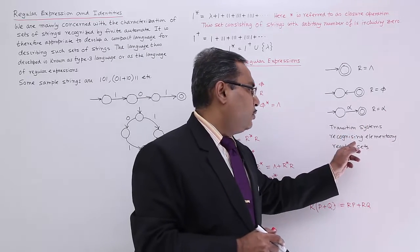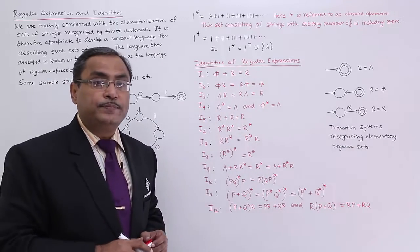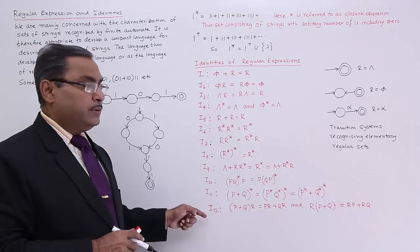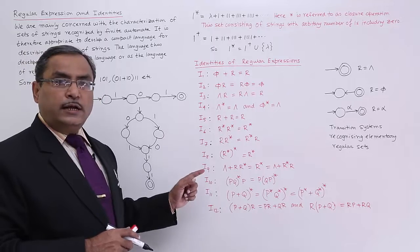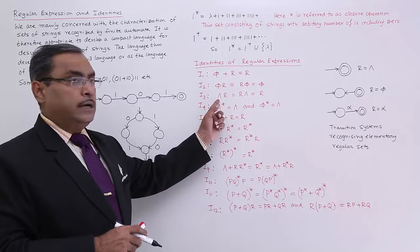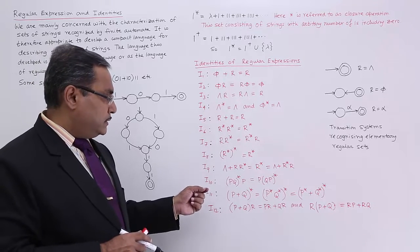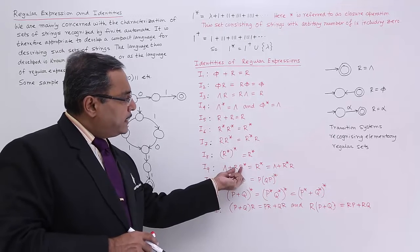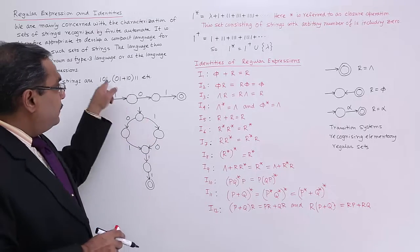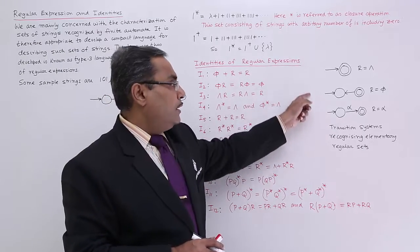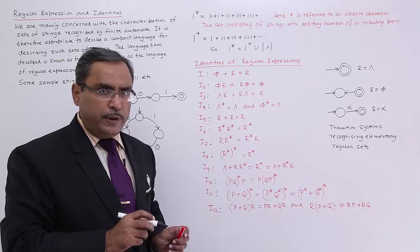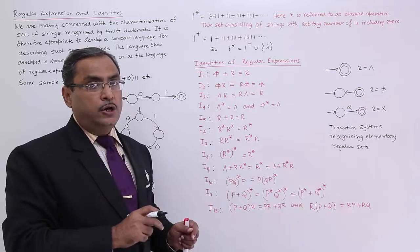Transition systems recognizing elementary regular sets — this is a very basic concept. Now, these are the identities you are supposed to remember. All these identities must be remembered. We know the meaning of plus, we know the meaning of null, we know the meaning of star, and if you write adjacent r star r, we know the meaning of that. In the next videos, so many problems will be solved where these identities will be applied as required.